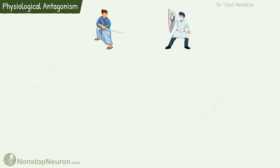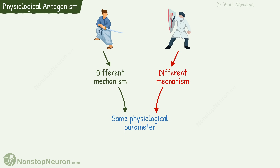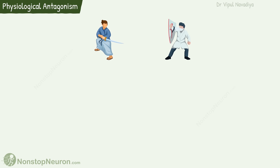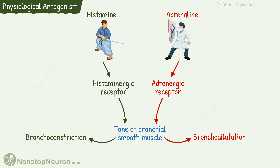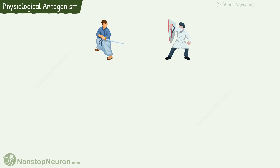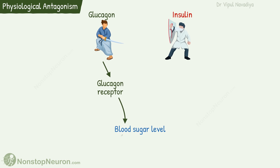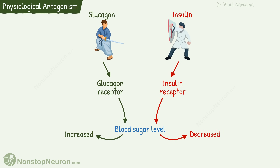Next is physiological or functional antagonism. In this, both substances act by different mechanisms, but their ultimate effect is on the same physiological parameter in opposite directions. For example, histamine versus adrenaline on bronchial smooth muscle tone — histamine produces bronchoconstriction and adrenaline produces bronchodilation. Similarly, glucagon and insulin are physiological antagonists: glucagon acts on glucagon receptors and increases blood sugar, while insulin acts on insulin receptors and decreases it.